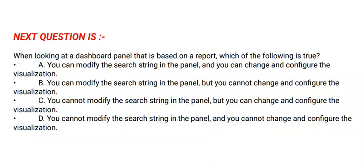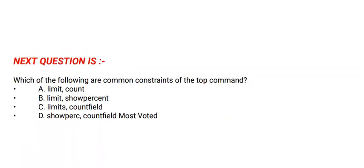The correct option is Option C. Next question is: which of the following are common constraints of the top command? Options are: Option A: limit count. Option B: limit show percent. Option C: limits count field. Option D: show perk count field, most voted.